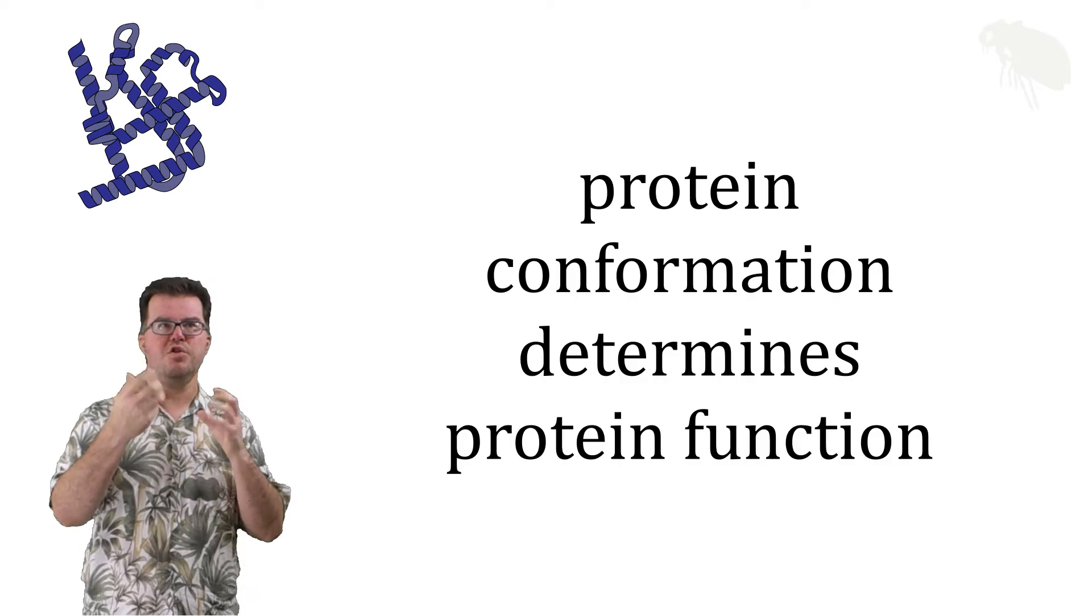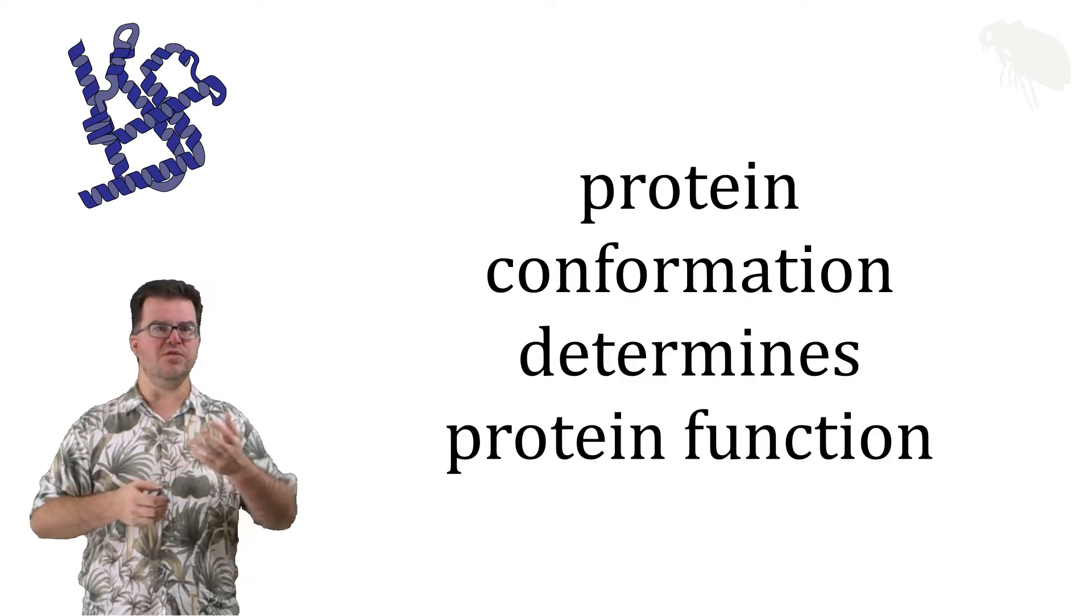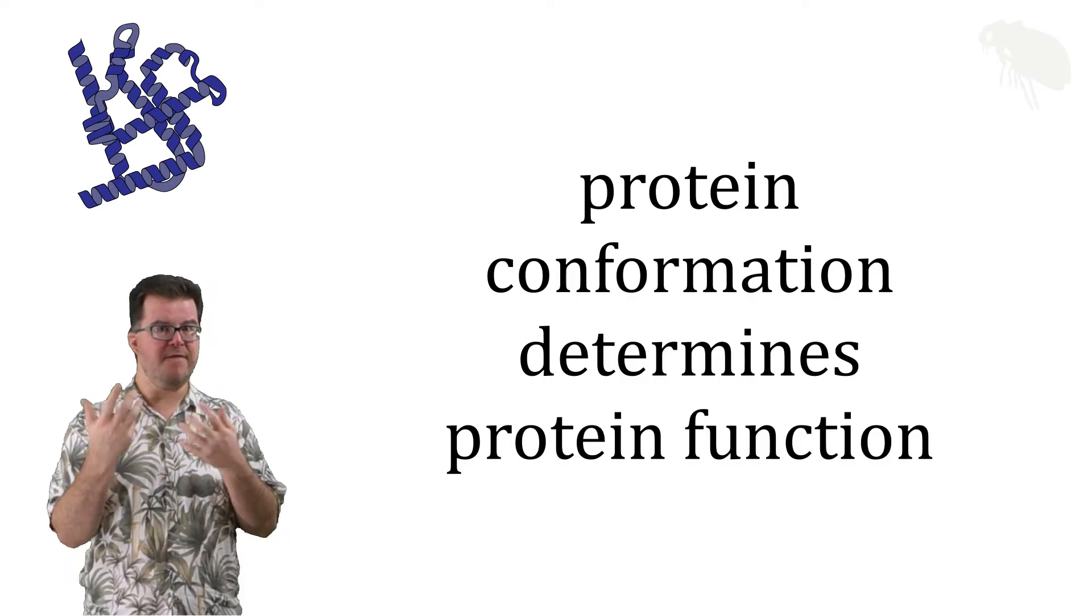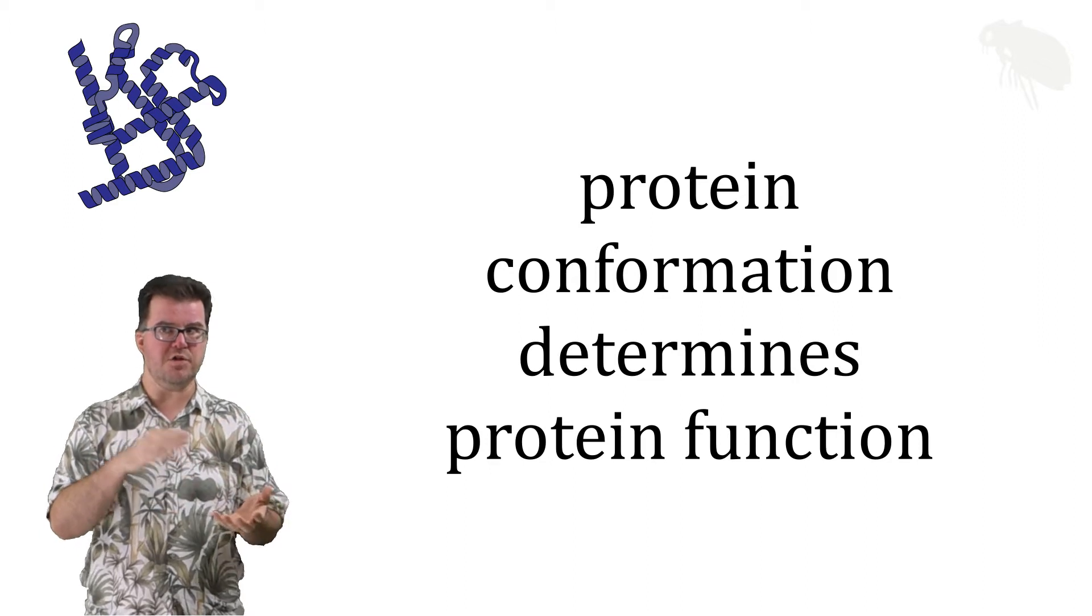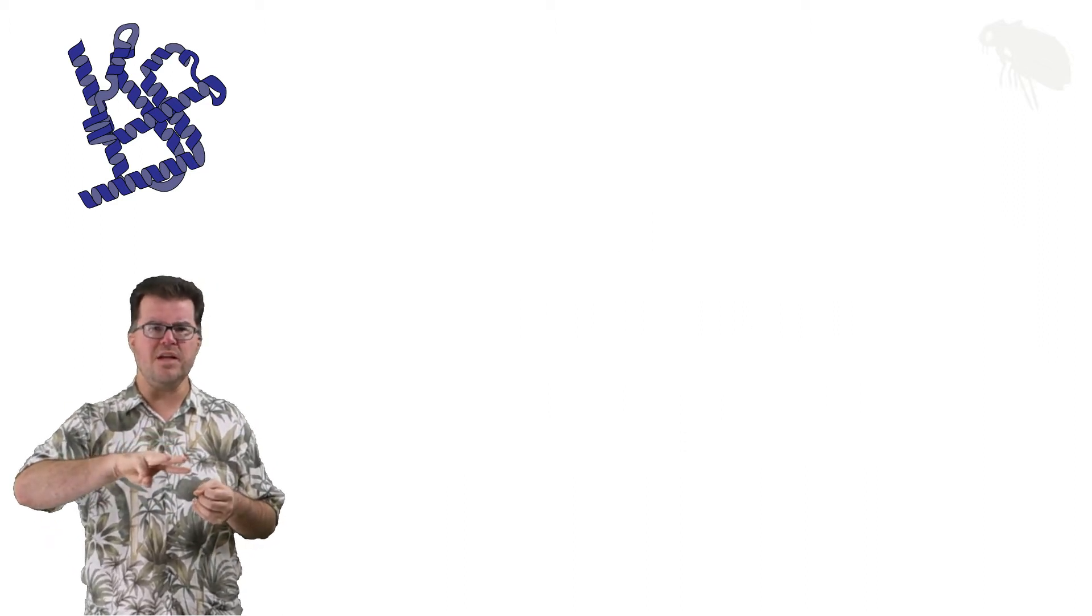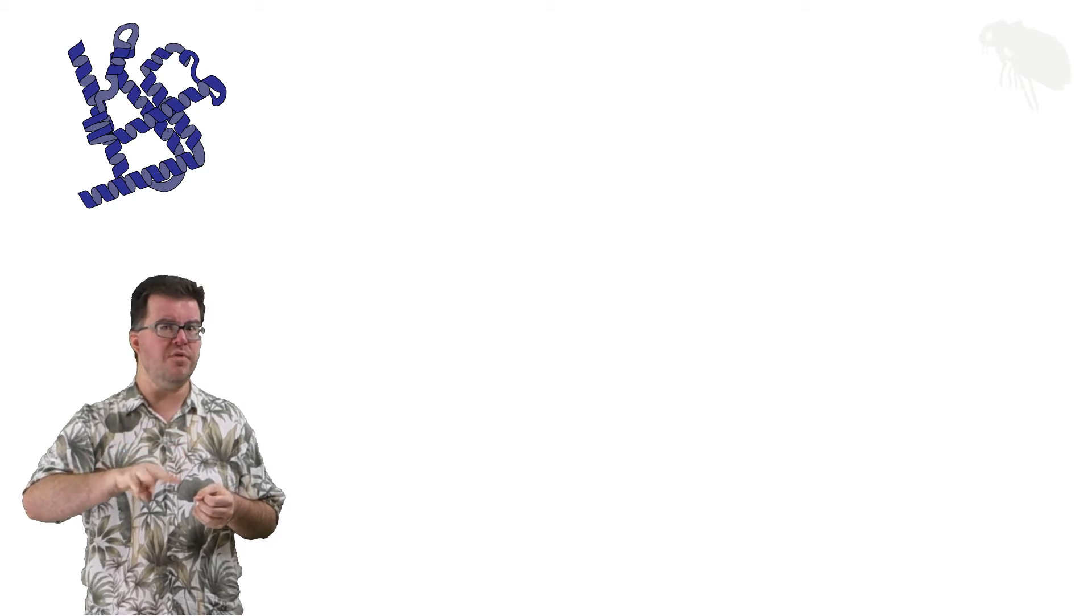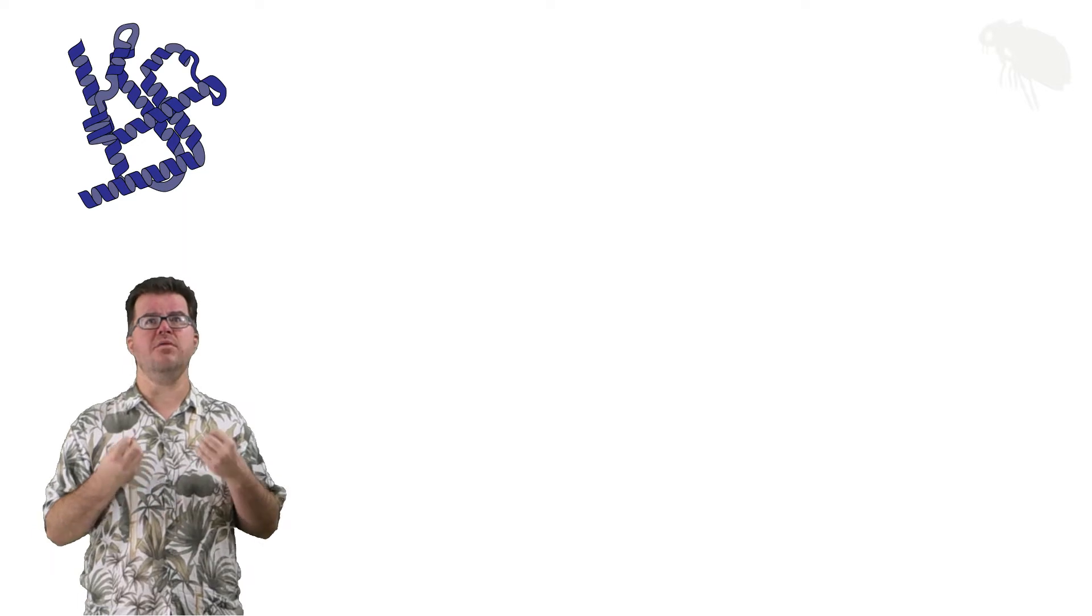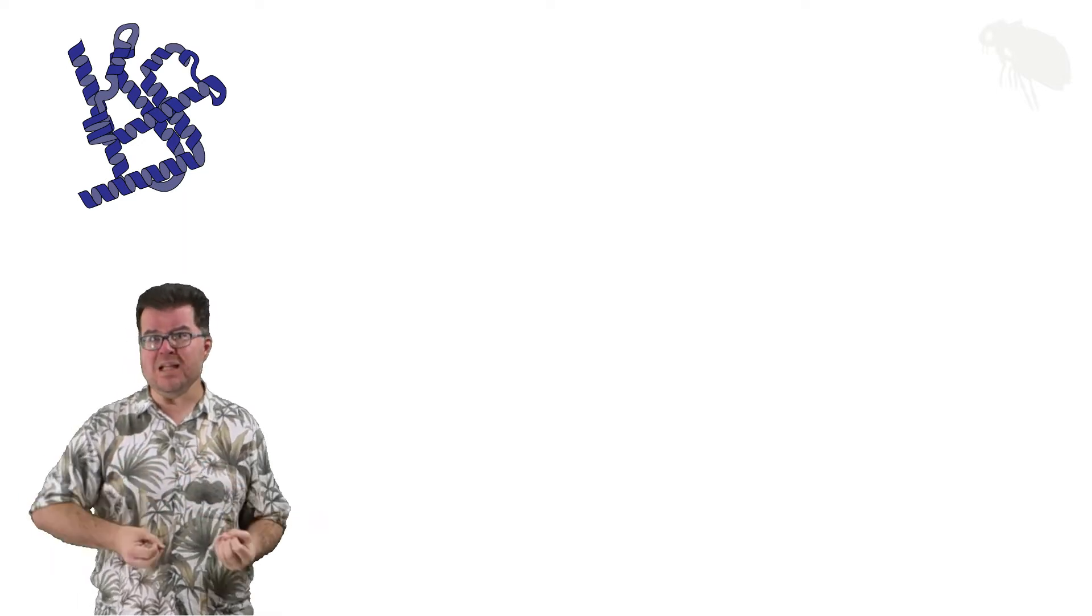And so within cells, the protein's conformation determines its function. And so anything that affects the conformation potentially affects the function. And remember, at those three levels of folding, the one force present at all three is hydrogen bonding. And so any environmental variable that impacts hydrogen bond stability has a huge potential impact on protein.